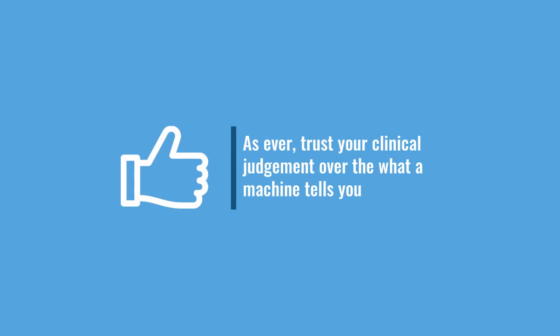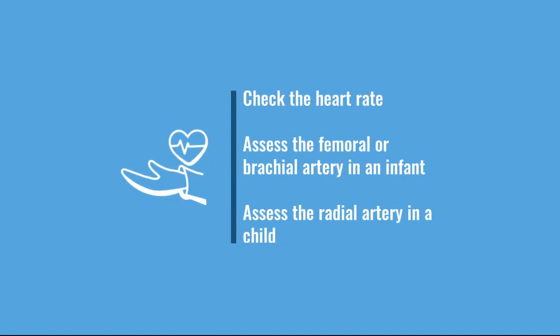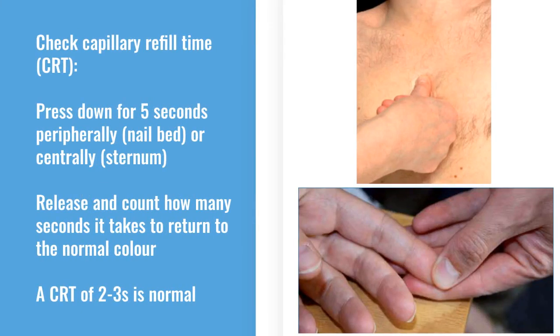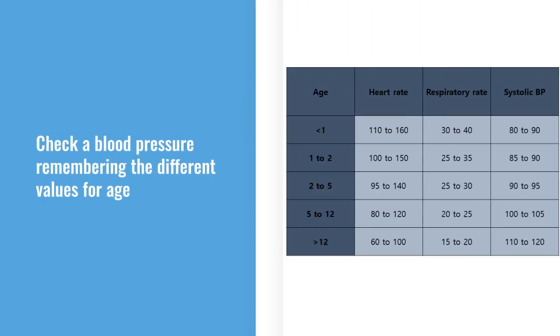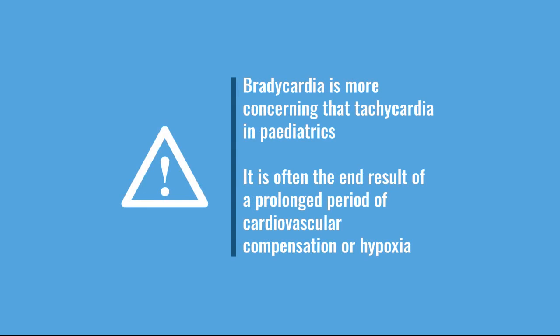Moving on to C for circulation: look at skin color — are they pink, pale, or mottled? Know your normal values for heart rate so you can recognize abnormal values. For an infant, check the femoral or brachial pulse; for a child, check the radial pulse. Don't forget to check capillary refill time both on the sternum and peripherally. Children tend to compensate for a long time, so alterations are quite late signs. Tachycardia can be caused by pain, stress, anxiety, sepsis, or hypoxia — but be aware that prolonged or severe hypoxia ultimately leads to bradycardia and diminishing central pulses, which is bad.